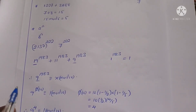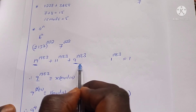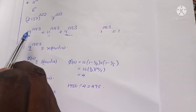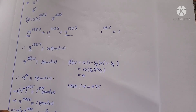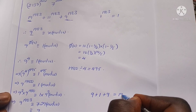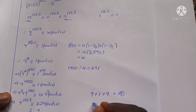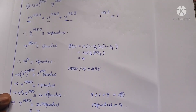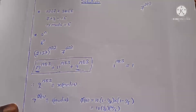So the unit digit of 19^1,983 is 9, the unit digit of 11^1,983 is 1, and the unit digit of 9^1,983 is 9. The unit digit of the full sum is the unit digit of 9 + 1 + 9 = 19. Taking 19 mod 10 gives 9. Therefore, the unit digit of 19^1,983 + 11^1,983 + 9^1,983 is 9.